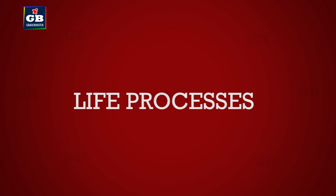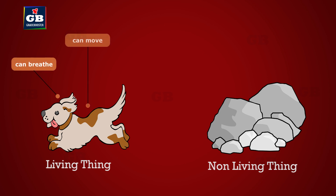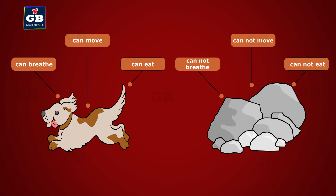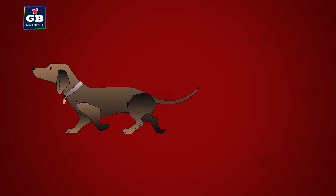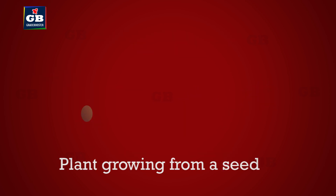We have been studying about living and non-living things. With the help of certain characteristics, we distinguish between them. A dog wagging its tail, an ant crawling — these are living things because they are moving. So movement is a sign of living.